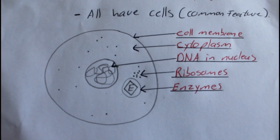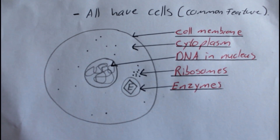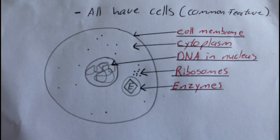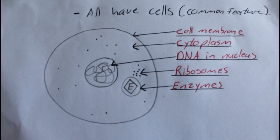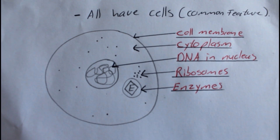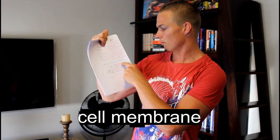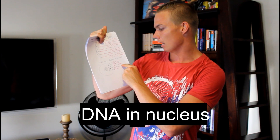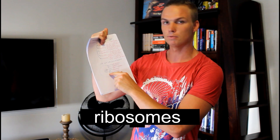Next you have to know the cell. I suggest that you draw the cell and label it — that's one of the best ways to learn it. Common features of the cell include the cell membrane, cytoplasm, DNA in the nucleus, ribosomes, and enzymes which help with reactions.